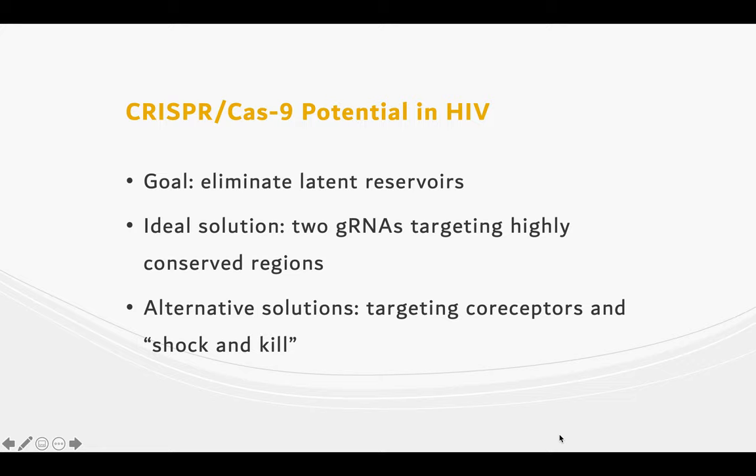Reactivation of the latent virus is a method known as shock and kill. The CRISPR-Cas9 system can fuse with transcription activator domains, turning the latent virus active and then allowing it to be targeted by the antiretroviral therapies for destruction.